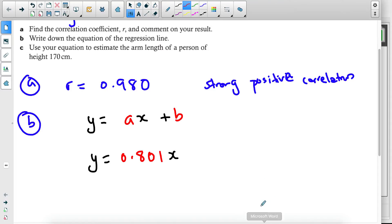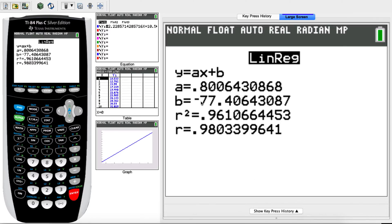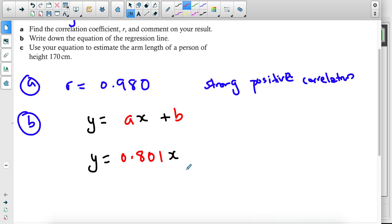And then for the b value, we have negative 77.4. Again, I'm talking about three significant figures. So this is my first significant figure, second significant figure, and then third significant figure. Four doesn't round because it's next to the zero. So I have negative 77.4. And that's it. That's your line of linear regression.